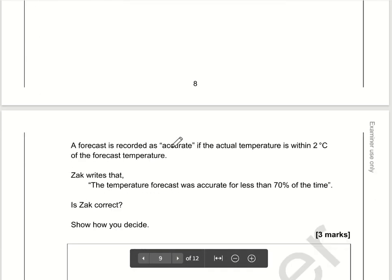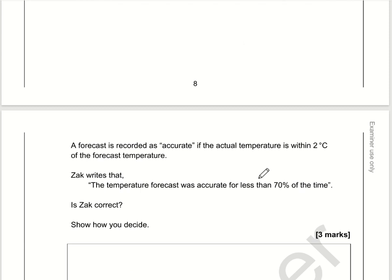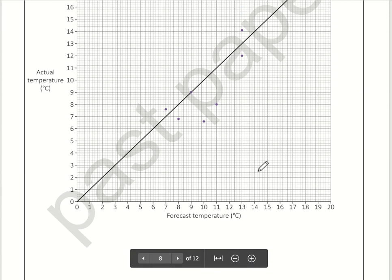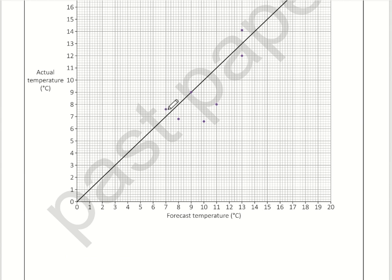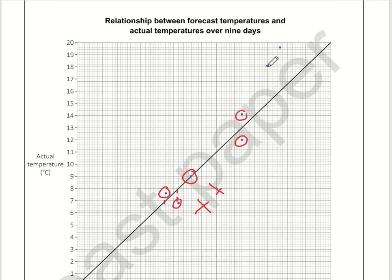A forecast is recorded as accurate if the actual temperature is within 2 degrees. Zach writes that the temperature forecast was accurate for less than 70%. Let's work out how many times it was accurate. Anything within 2 degrees is accurate. This one is accurate, this one is accurate, this one here was bang on, this one is more than 2 from the line so not accurate, this one is more than 2 — not accurate, accurate, accurate, this one is 3 from the line so not accurate, and that one is more than 2 as well. So 5 out of 9.